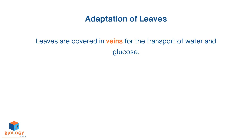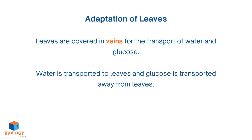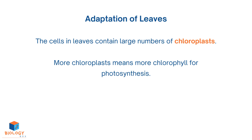Leaves are covered in veins for the transport of water and glucose. Water is transported to leaves and glucose is transported away from leaves. The cells in leaves contain large numbers of chloroplasts. More chloroplasts means more chlorophyll for photosynthesis.